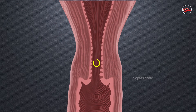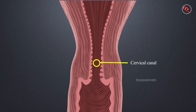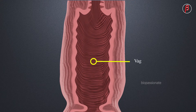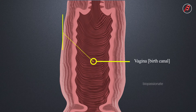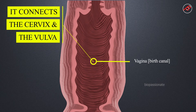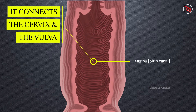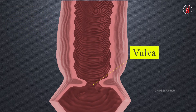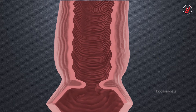The cervix is the narrow entrance of the uterus into the vagina. The cavity of the cervix is called the cervical canal. The vagina is about 10 cm long and acts as a receptacle for the penis during copulation, and allows passage of menstrual flow and serves as the birth canal during parturition. The vulva is the external genitalia having an aperture called the vaginal orifice.